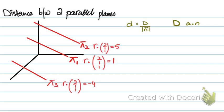I have three planes over here with the same normal, which means they're all parallel, but their capital D, a dot n, is different. For plane 1, it's 1, for plane 2, it's 5, and for the third one, it's minus 4.